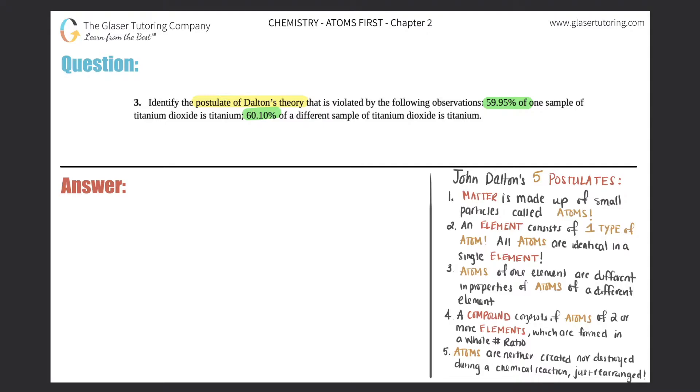So we want to know which one is violated, which means we want to know which one out of the five postulates doesn't fit. Which one, what does this tell us as far as how is this wrong?